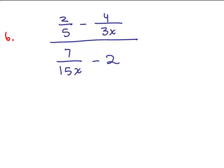Here's number 6. 2 fifths minus 4 over 3x, all over 7 over 15x minus 2. This is a complex fraction. First of all, it looks complex, doesn't it? But basically, if you have a fraction where there's at least one fraction in the numerator or denominator, you've got a complex fraction.